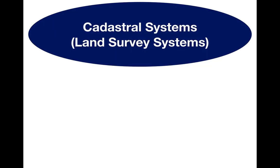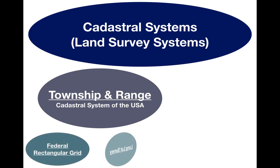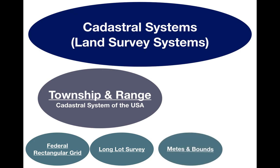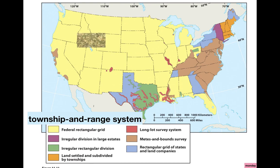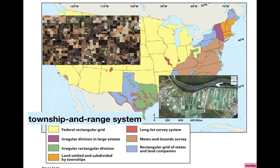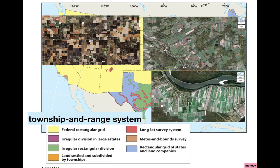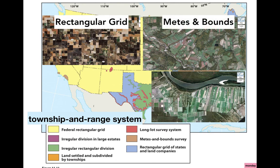Switching gears, we're going to look at land survey systems here in the United States. A cadastral system is just another name for a land survey system, and the one we use here is called the township and range. Within the township and range, we have further divisions into the federal rectangular grid, long lot survey, and metes and bounds. The federal rectangular grid is the most common, and we can see it throughout the western states — this is what it looks like when you fly over. Down in the south along the Mississippi River, we see the long lot survey, and on parts of the east and west coast with some topography, we see metes and bounds. These are the three most important types of survey systems to know for the AP exam.